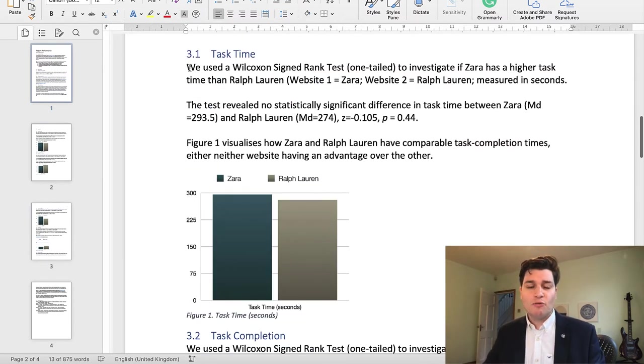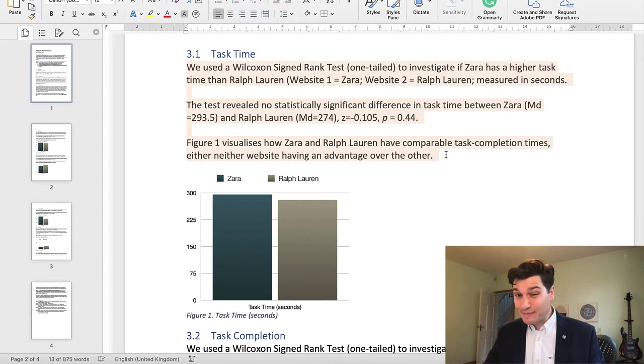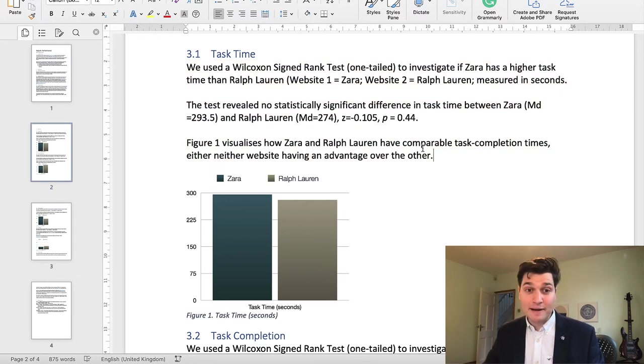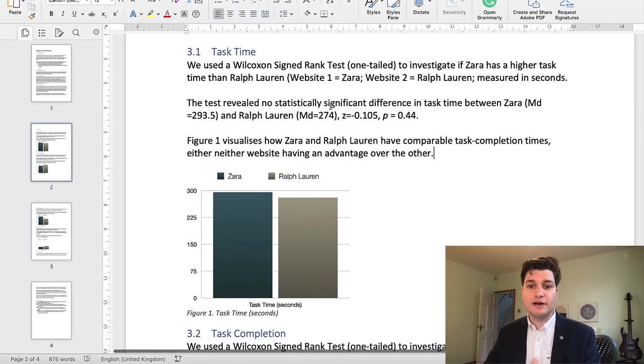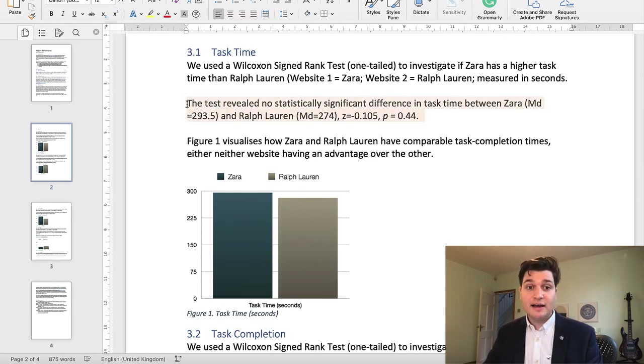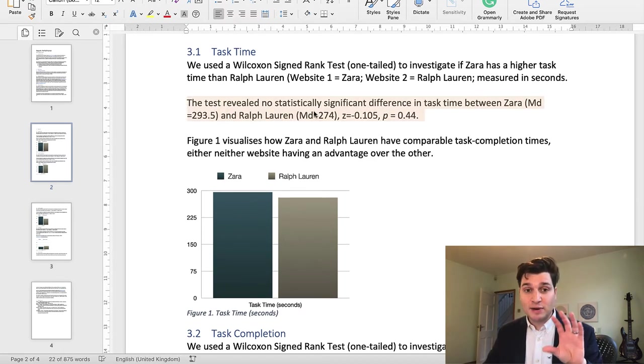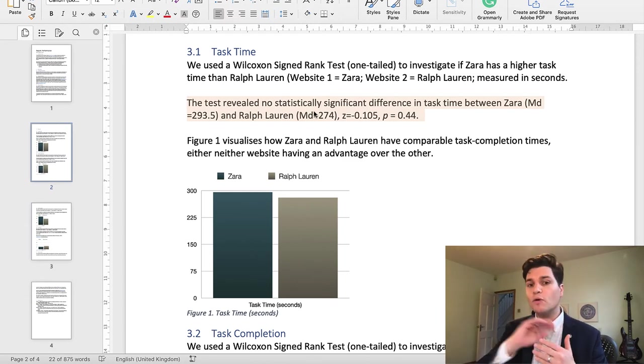Then results. We actually start with stats because that's the important part. That's the big takeaway. So we used a Wilcoxon signed rank test to investigate if Zara had a higher task time than Ralph Lauren. The test revealed no significant difference. Okay. And then we visualize that zero difference. So it's a really short, simple way of writing up. This is how you write up the stats clearly. And if you don't quite understand these parts, again, look at my previous video about writing up stats. And I go through all these bits individually.